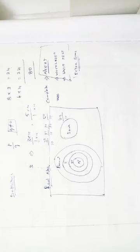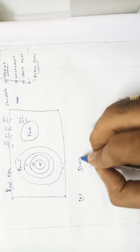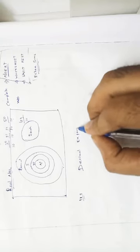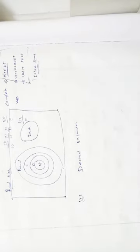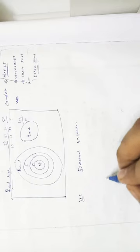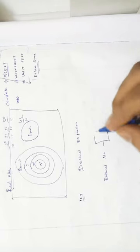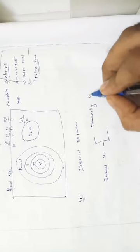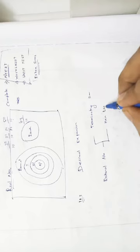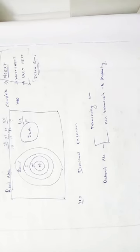Exercise 1.3 is about decimal expansion. Real numbers divide into rational and irrational. For rational numbers, decimal expansion is of two types: terminating decimal expansion, and non-terminating repeating decimal expansion.